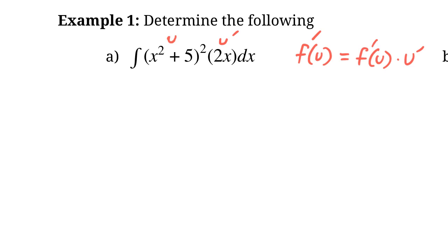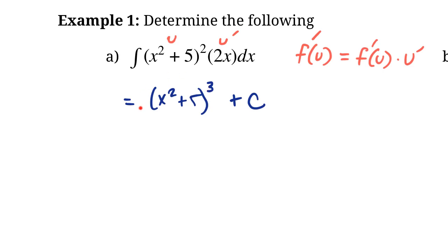So how can we undo this chain rule? If we did this backwards, what would we end up with in the exponent? We'd end up with something like x² + 5 to the power of 3. And then we know we have to have plus C at the end because it's an indefinite integral. But let's try to take the derivative of this. We'd bring the 3 down, lower it to a power of 2, and then multiply by 2x.